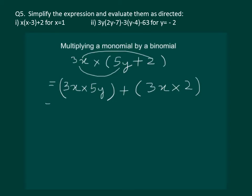Now, we have 2 monomials in each bracket and it is very easy to multiply them. It comes out to be 15xy plus 6x.